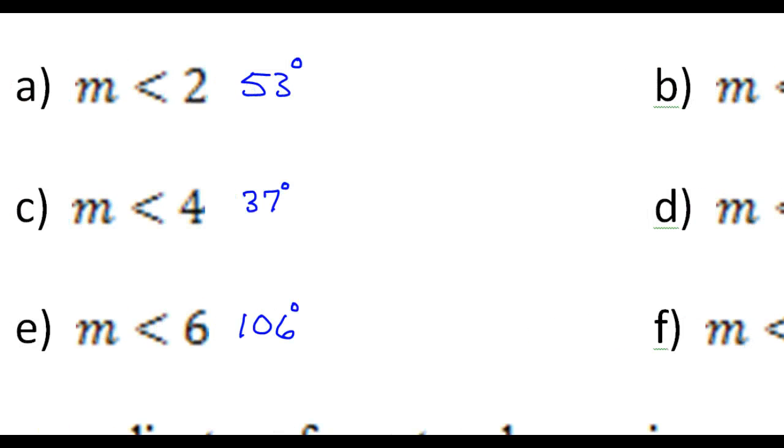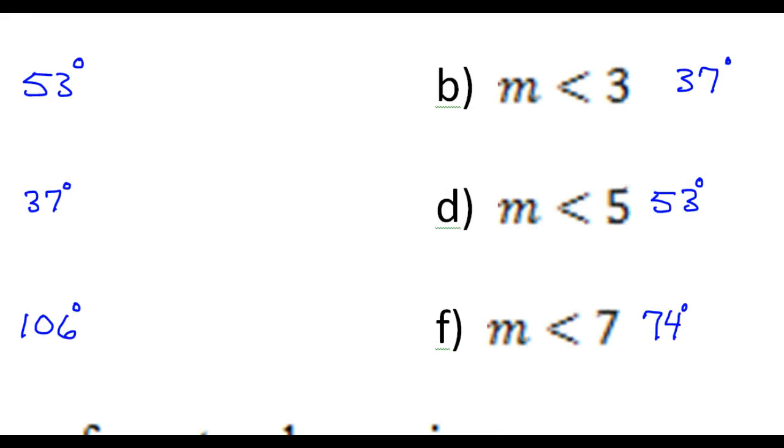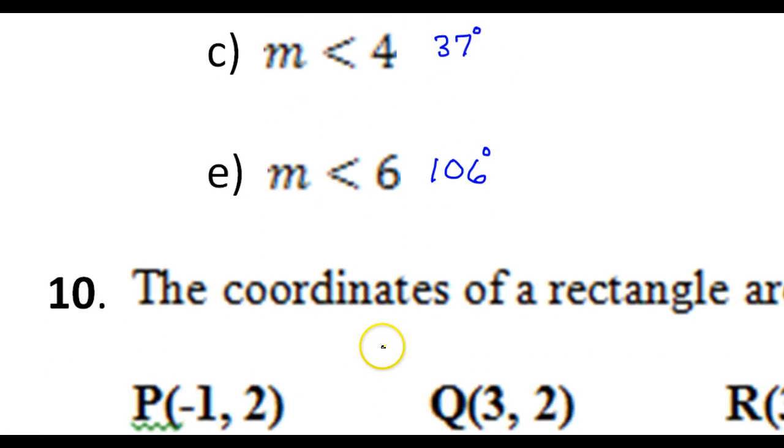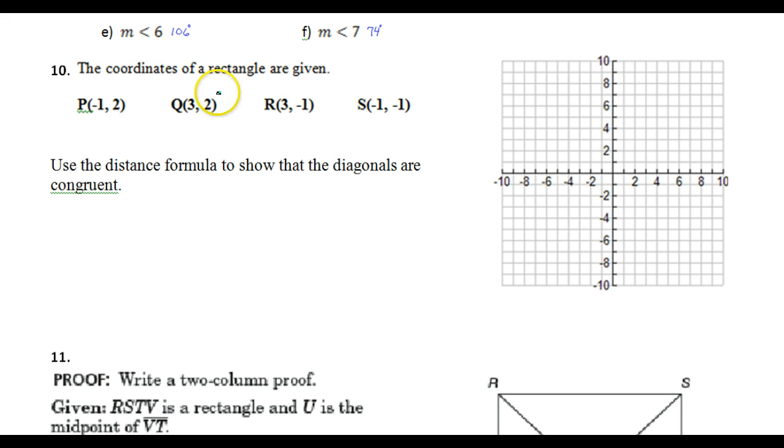And that's it. I think we found everything. So here are all the angles together. Moving on. Number 10. The coordinates of a rectangle are given. So let's see.